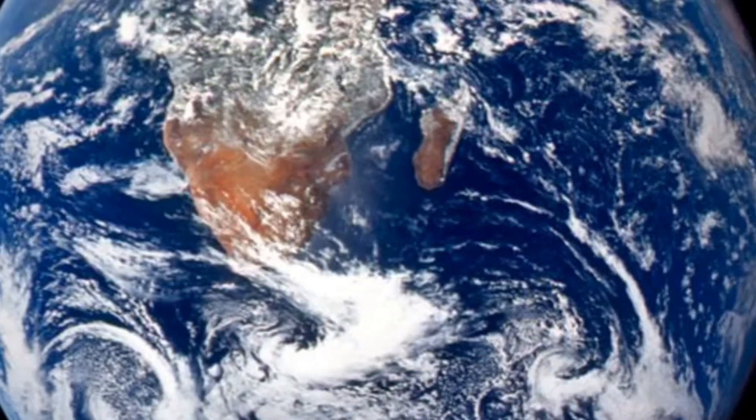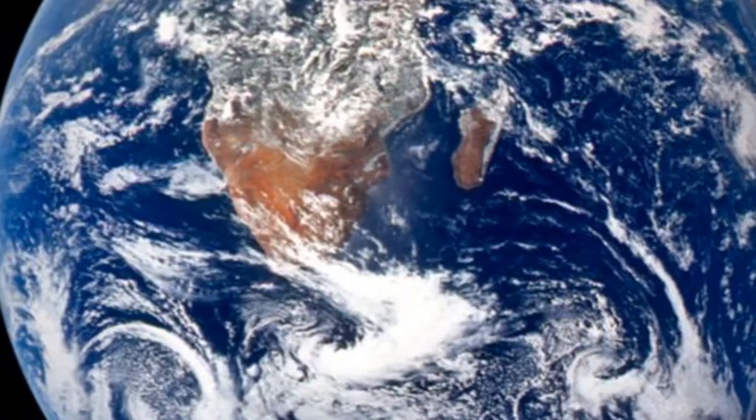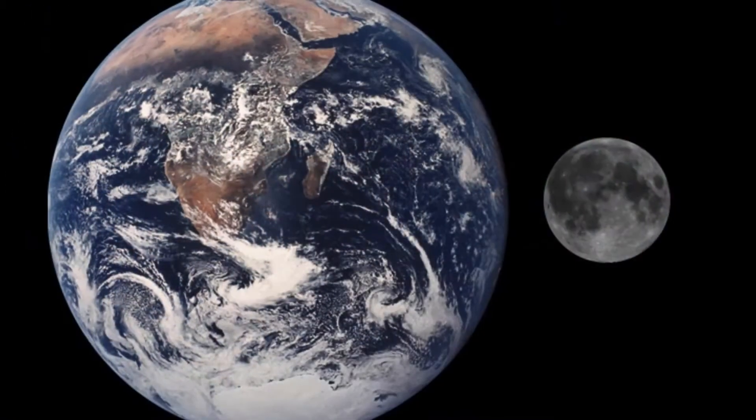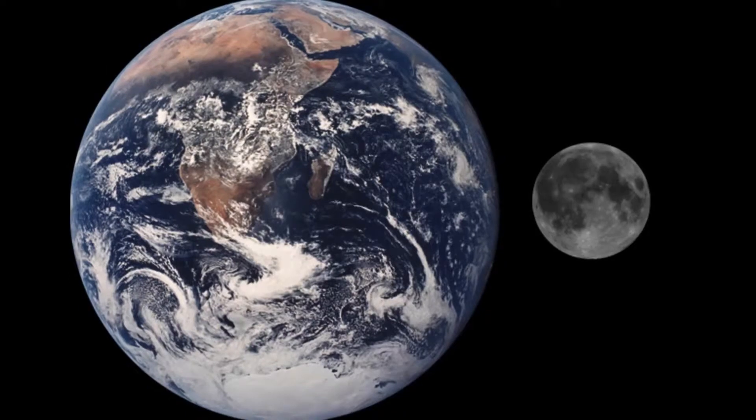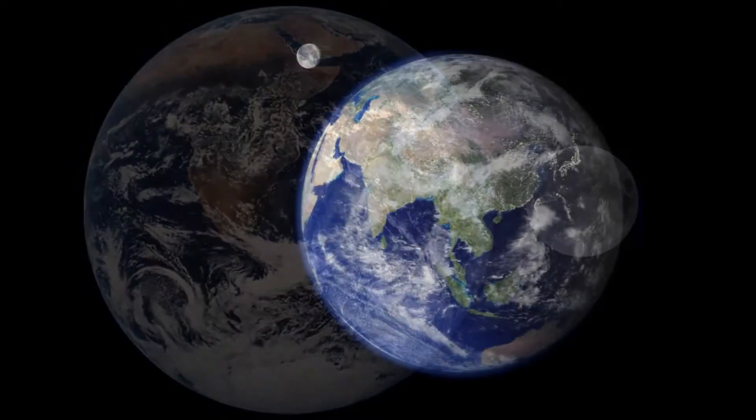These globally distributed faults have emerged as the most common tectonic landform on the moon. An analysis of the orientations of these small scarps yielded a surprising result.